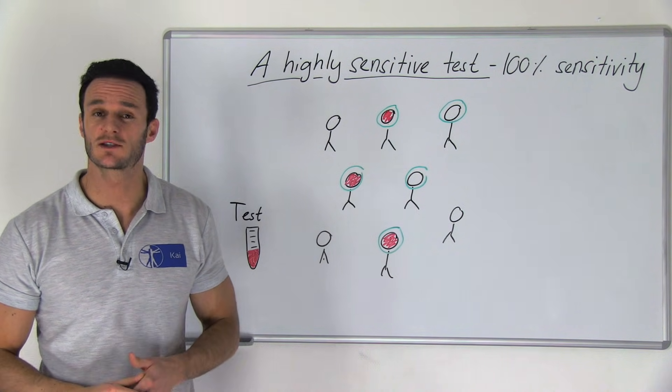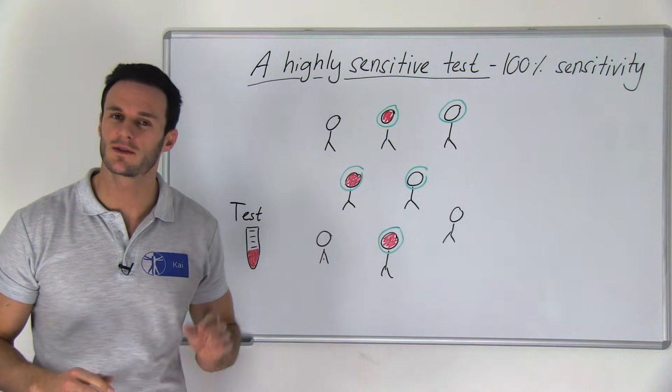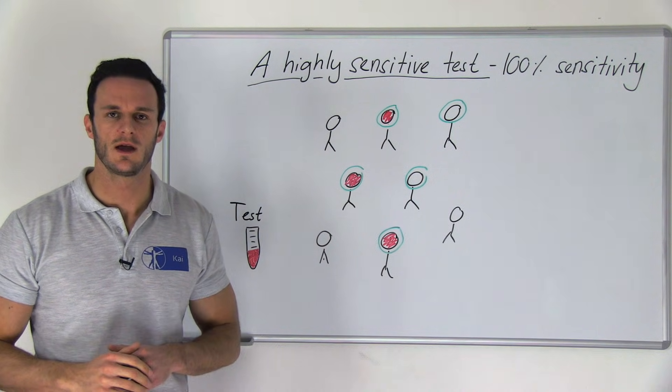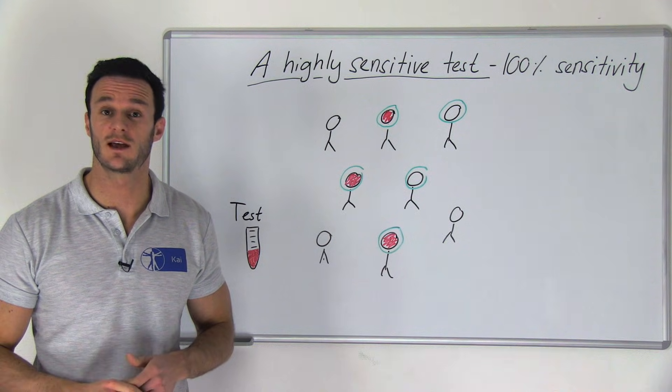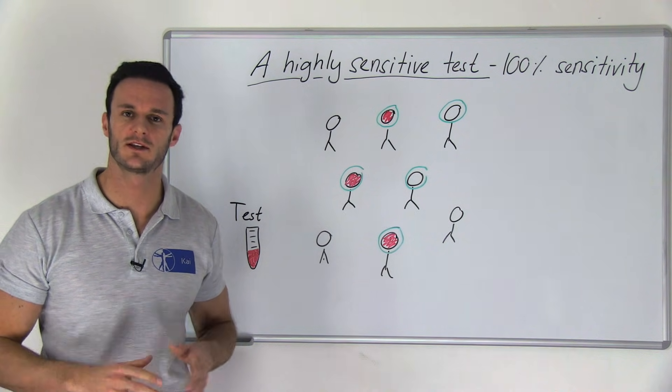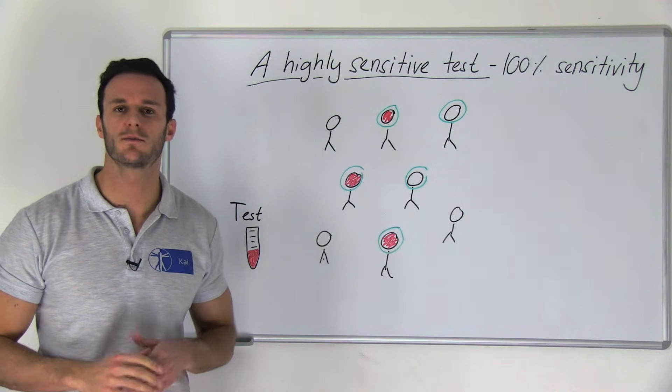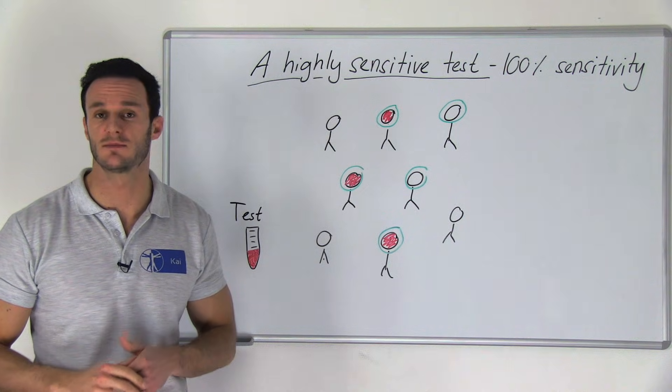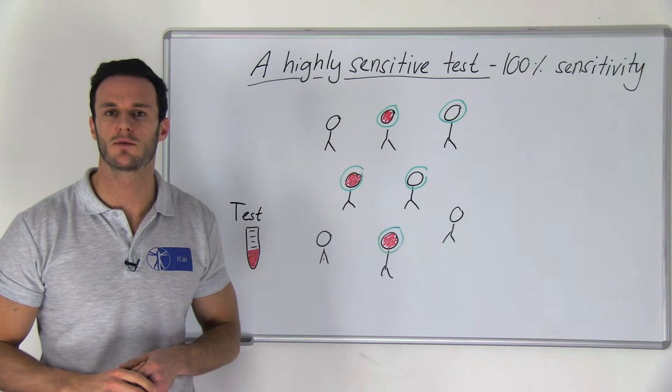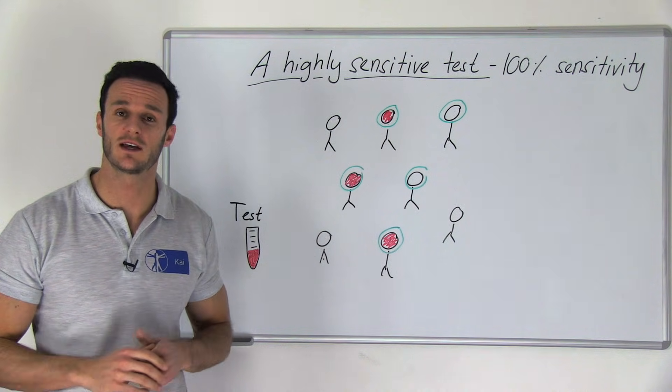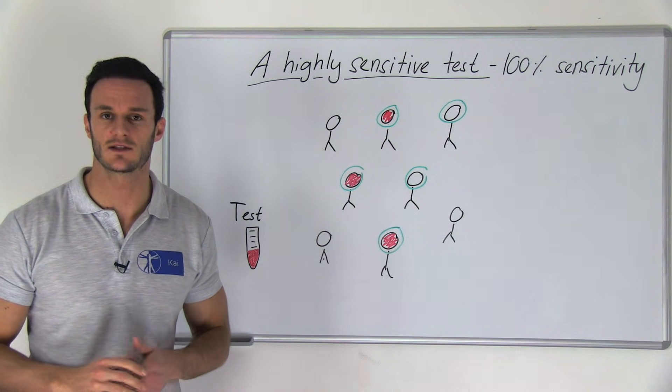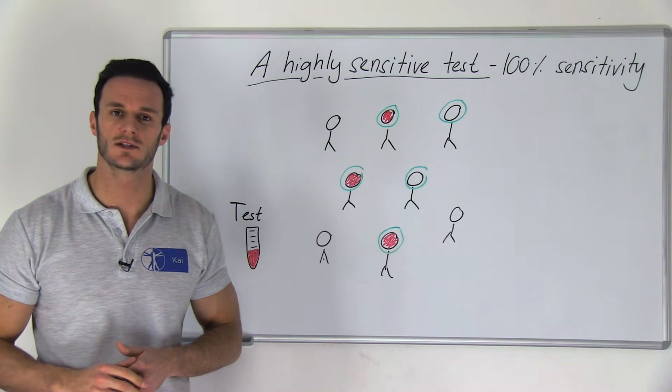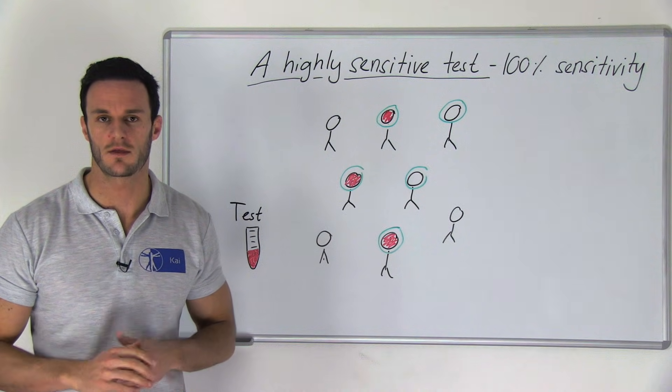Imagine an alarm that you have installed at home and that goes off with the tiniest movement. So a 100% sensitive test is a test that can detect all people that have the disease, so no single person that has the disease is missed. You can imagine that you would want to have a highly sensitive test when you are testing for potentially fatal diseases like cancer, because missing an ill person could potentially lead to the person's death.